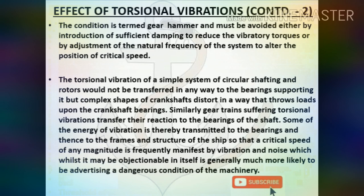Torsional vibration in complex crankshafts throws loads upon crankshaft bearings. Gear trains suffering torsional vibrations transfer their reaction to the shaft bearings. Some vibration energy is transmitted to frames and structure of the ship, so a critical speed is frequently manifest by vibration and noise, which while objectionable in itself is generally indicating a dangerous condition of the machinery.